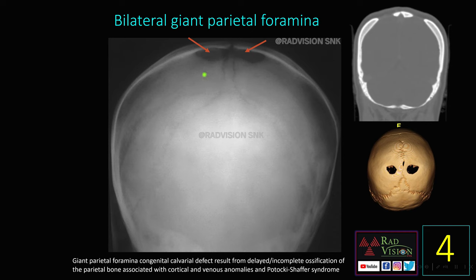The fourth case: these are bilateral giant parietal foramina. Whenever you see symmetrical lucencies in the parasagittal location in the high parietal bones, definitely suspect bilateral giant parietal foramina. On CT coronal bone window and VRT sections, these are clearly the bilateral giant parietal foramina. Giant parietal foramina are congenital calvarial defects resulting from delayed or incomplete ossification of the parietal bone. They are commonly associated with cortical venous anomalies and Potocki-Shaffer syndrome.